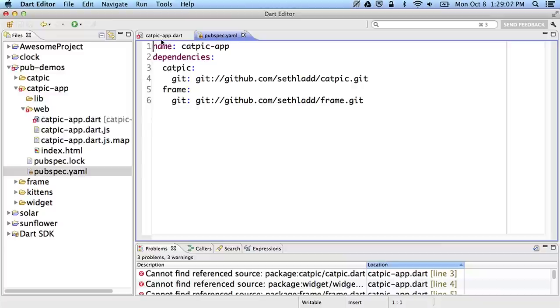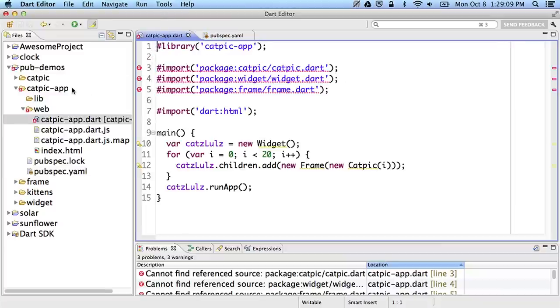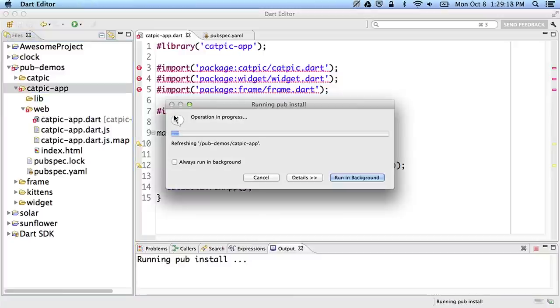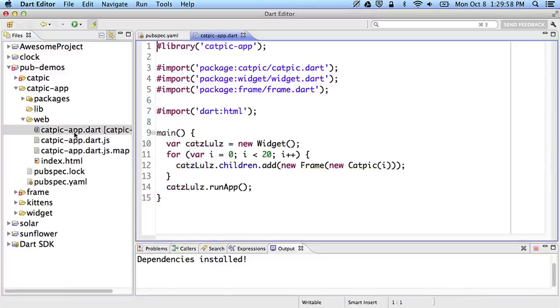But perhaps there's already a port of your favorite library to Dart. To discover, install, and manage third-party Dart libraries, use Pub, our package manager. A simple configuration file declares your application's dependencies, and with a quick command, those libraries are downloaded and installed for your app. Pub makes it easy to share your code, install libraries from other developers, and keep your dependencies up to date.